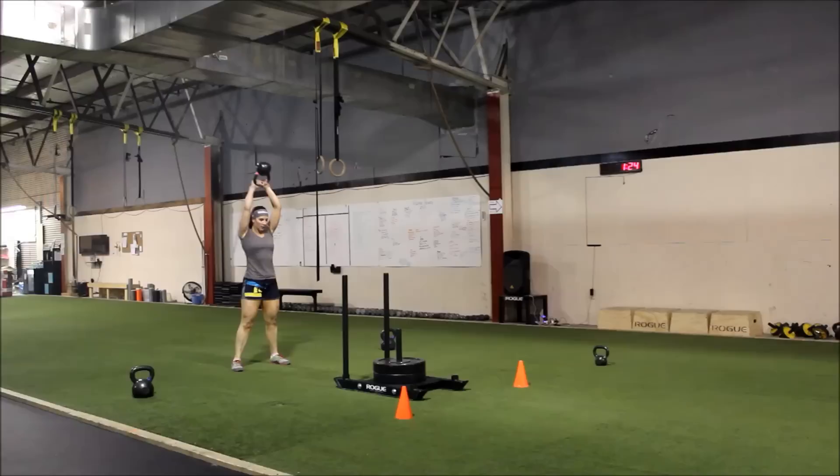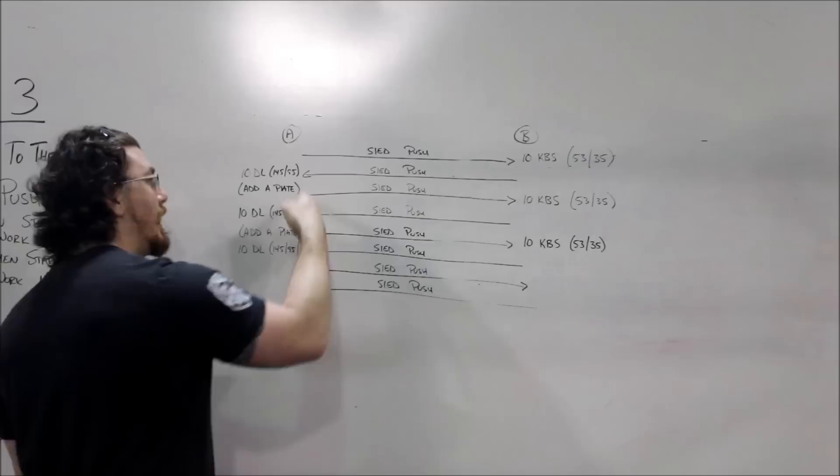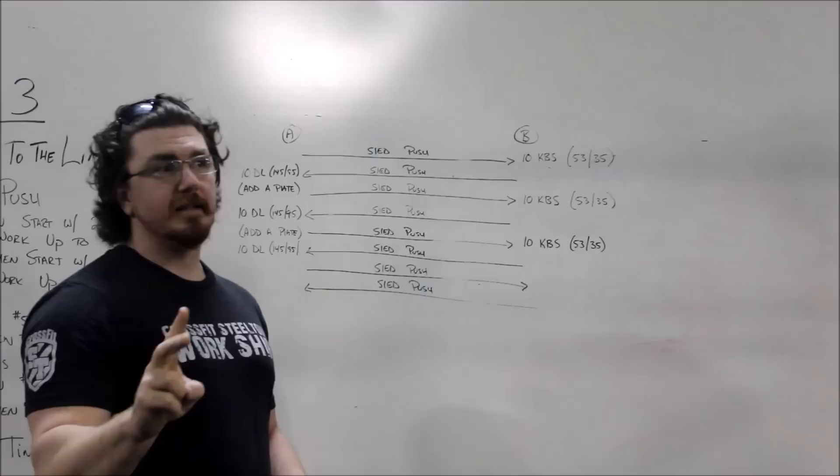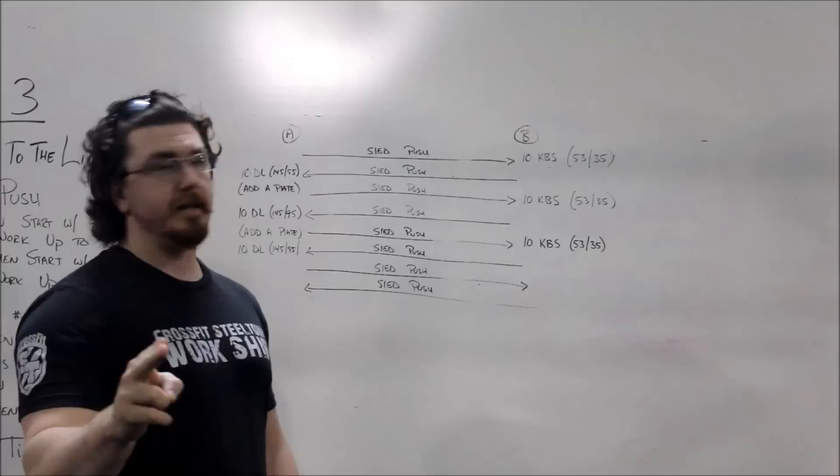Once you complete the 10 kettlebell swings, you're going to jump back on the sled, push it down across this line. Once you cross the line, you're going to have two tasks. You're going to have a task to do 10 deadlifts and a task to put an additional plate on your sled.